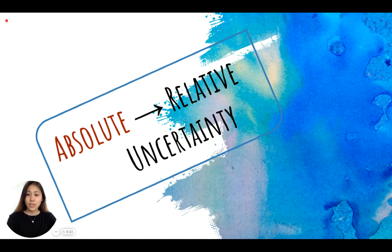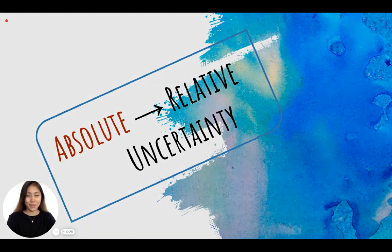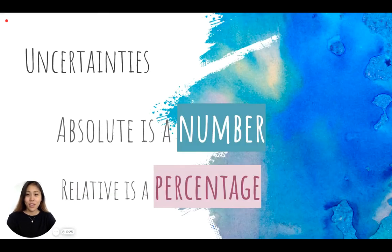Uncertainties can be converted from absolute to relative. So what is absolute and what is relative? Absolute is a number and relative is a percentage.